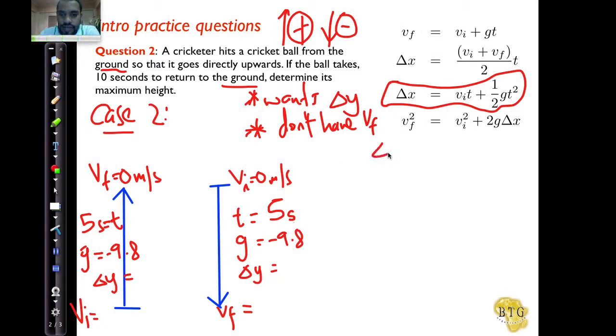So delta y is equal to vi t plus a half gt squared. And in your formula sheet, t may look like delta t. What do we want to solve for? We want to solve for the maximum height, in other words, delta y. And we don't have, in fact, we don't even need to manipulate the equation because we have everything. So V initial, let's use this one here from its height down because it's exactly the same.